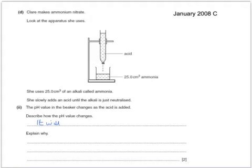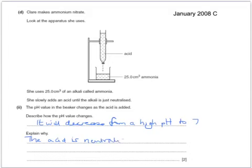So the pH value will decrease from a high pH to 7, and explain why: the acid is neutralising the alkali, and the acid has a pH less than 7.